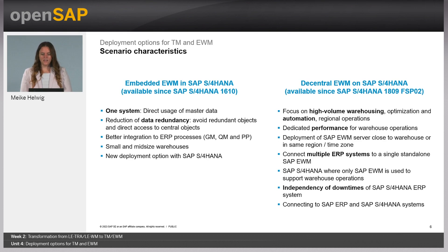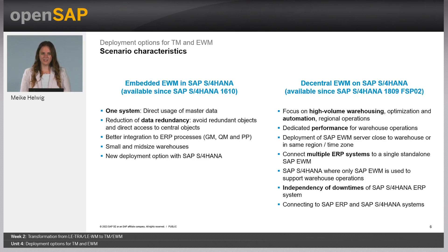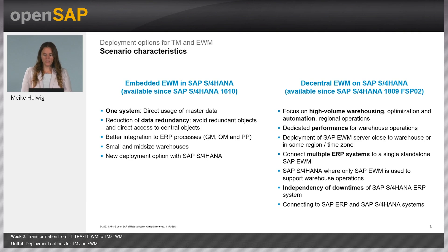Decentral EWM is more suited for high-volume warehousing. Here you can really optimize your system from a technical perspective for business processes in an automated warehouse. You can optimize performance and remain independent from the S/4HANA system, allowing you to deploy it right next to your warehouse — avoiding latency or network issues between the application server and business users. It is also possible in a Decentral deployment to connect several ERP or S/4HANA systems to one EWM system, and like with SAP Transportation Management, you are independent from S/4HANA system downtimes.